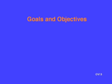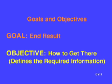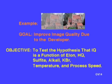It is important to separate the goal — the end result — from the objective — how we get there. In fact, the objective defines the required information. Here is an example of a goal and objective taken from the photographic chemistry industry. The picture on the left is washed out and not very pleasing. Our goal is to make the image quality better, like the picture on the right. The objective, however, defines what we are going to look at in the experiment.